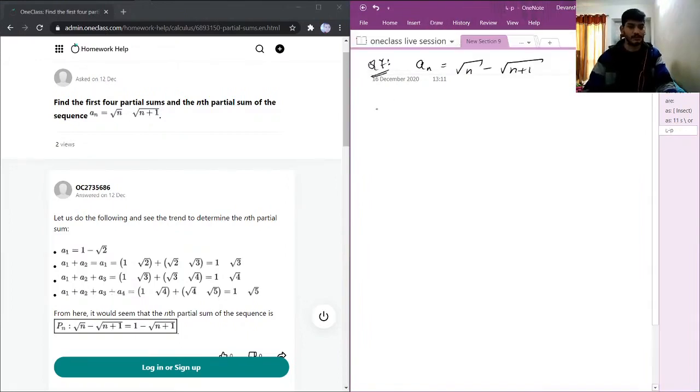For these kinds of questions, what we do is first find a1, then a2, then a3, a4. Then we try to find a pattern in all four or five terms which we have calculated, then we finally conclude the result.